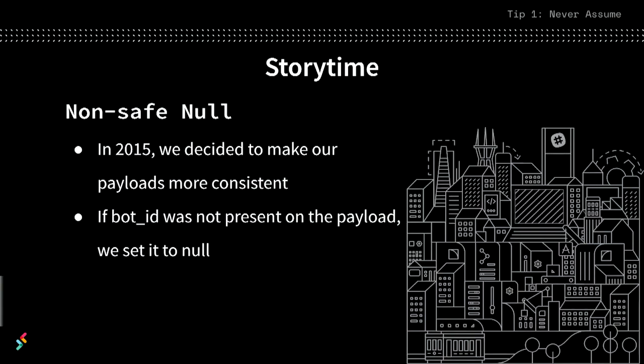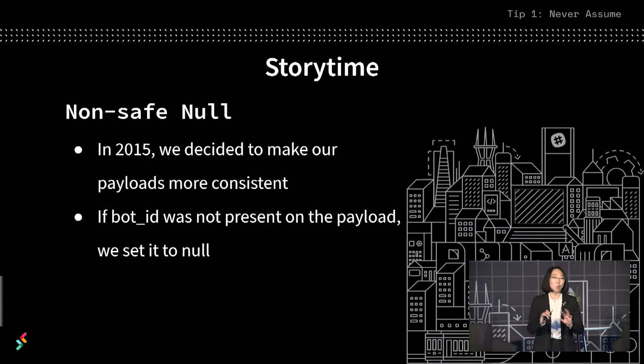In 2015, we decided we're going to make our payloads really consistent. We had this one field — the bot ID field — and sometimes it was present and sometimes it wasn't. We decided this field should always be present. When we have a false value, we're going to set it to null. No more of this sometimes there, sometimes not there. What we didn't realize is that there was implicit logic when the field was unset. Developers had taken advantage of the fact that sometimes this field was unset to build applications. So when we made this change and said this field is always going to be set, we actually broke those applications.